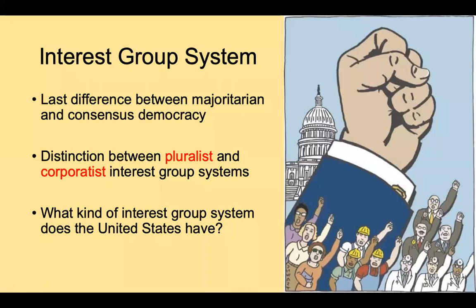The interest group system is really the last difference between majoritarian and consensus democracy. At the outset of this semester, we distinguished between these democracy types. Majoritarian systems often have single-member district electoral systems, presidential systems, majoritarian electoral institutions, and smaller party systems where power is more concentrated. Consensus democracies, on the other hand, often have proportional representation electoral systems, parliamentary legislatures, and multi-party systems — generally set up to be more consensual.